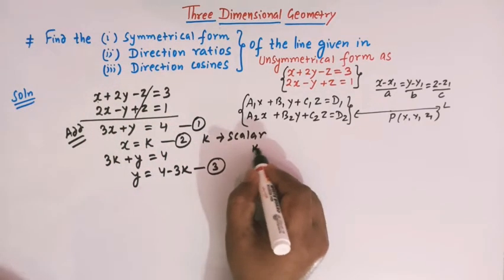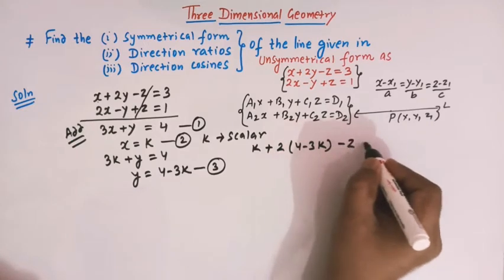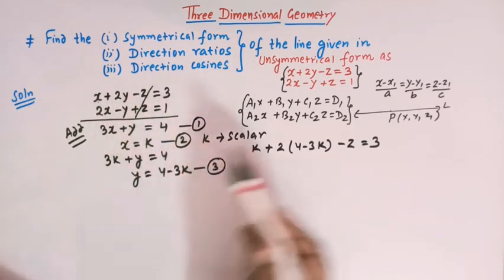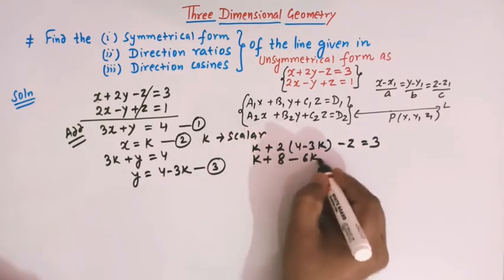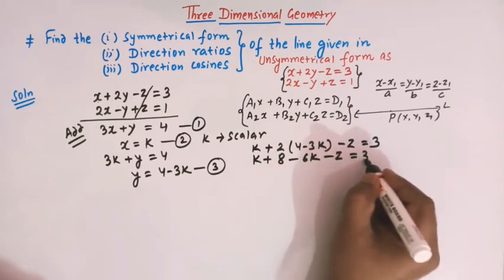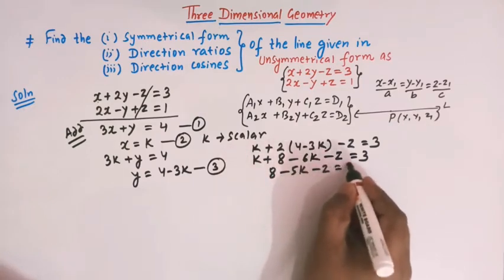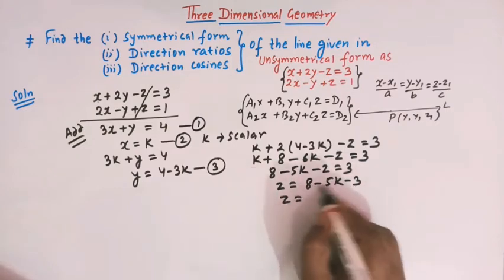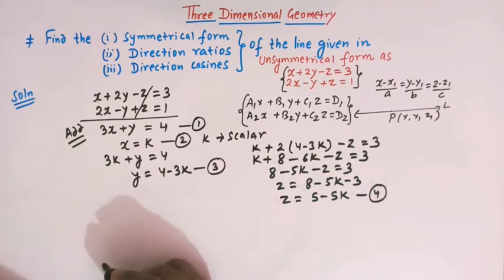We substitute x = k and y = 4 − 3k into equation 1 to find z in terms of k. We get k + 2(4 − 3k) − z = 3, which gives k + 8 − 6k − z = 3, so −5k − z = −5, and therefore z = 5 − 5k.